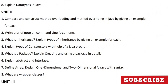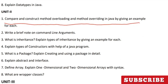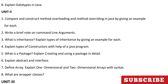The first question from unit two is: compare and contrast method overloading and method overriding in Java. Method overloading is using the same function name multiple times with different parameters, while method overriding means using the same method in a subclass but with different functionality. You need to explain both with examples.